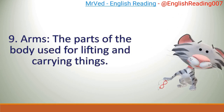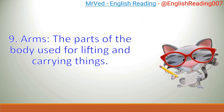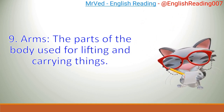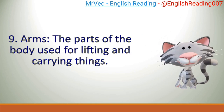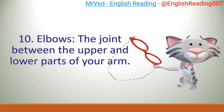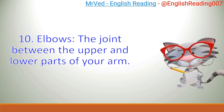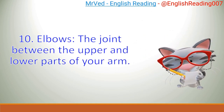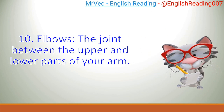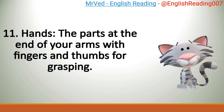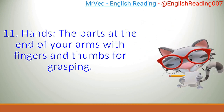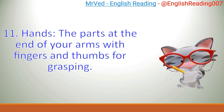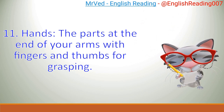9. Arms, the parts of the body used for lifting and carrying things. 10. Elbows, the joint between the upper and lower parts of your arm. 11. Hands, the parts at the end of your arms with fingers and thumbs for grasping.